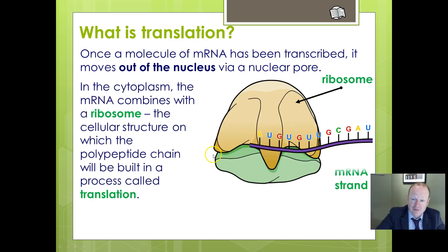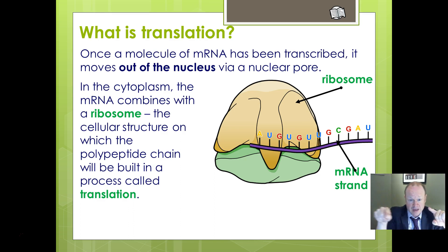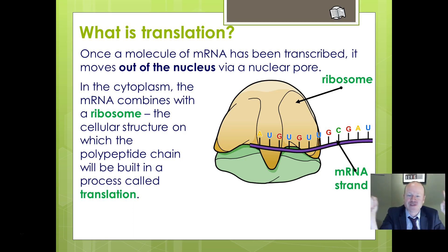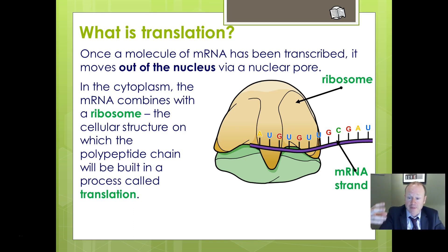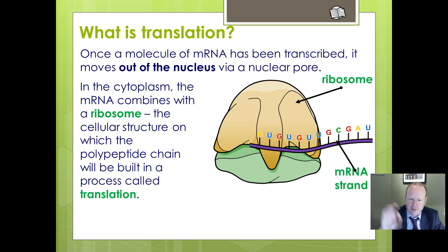Once the messenger RNA is formed, it moves out of the nucleus through the nuclear pore — the nuclear envelope is a double layer of membrane with pores — so that messenger RNA can move out to the ribosomes where translation occurs. The ribosomes are the site of translation; they can be free in the cytoplasm or attached to the rough endoplasmic reticulum. The ribosome moves along the messenger RNA strand reading sequences of three, and this process of the ribosome moving along and reading the triplets is translation.